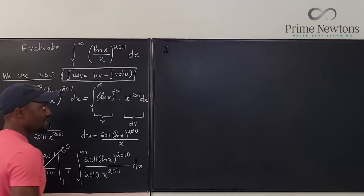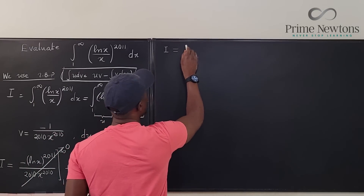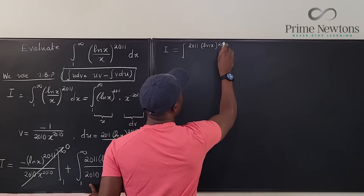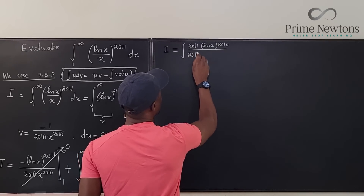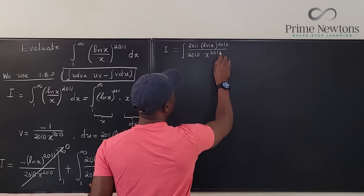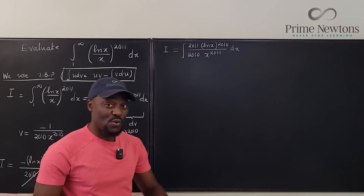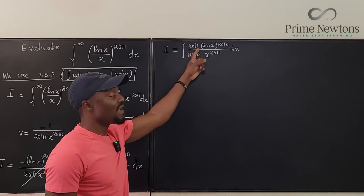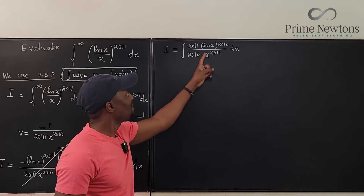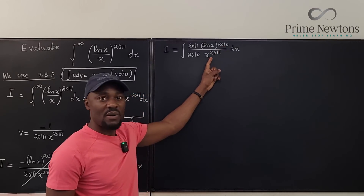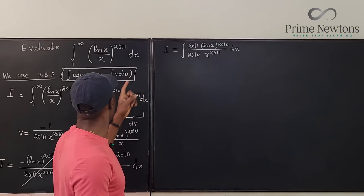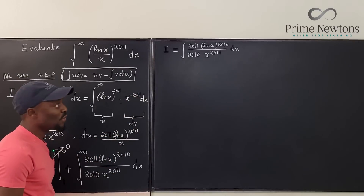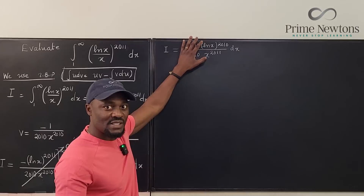So the boundary term goes to zero, meaning the initial integral I is actually equal to the integral from 1 to infinity of 2011·(ln x)^2010 / (2010 · x^2011) dx. Ask yourself: what has changed from the original problem? The power of ln x dropped from 2011 to 2010, but the denominator still has x^2011 — that has not changed.